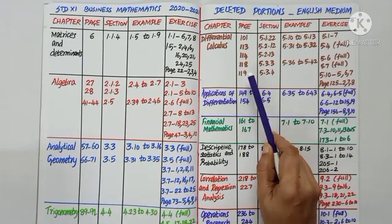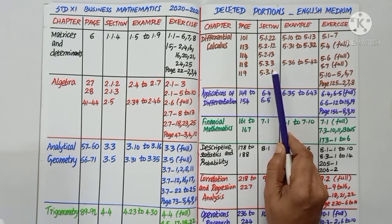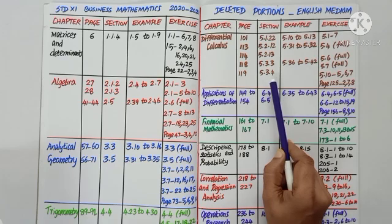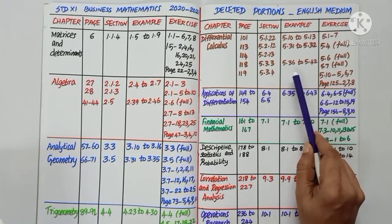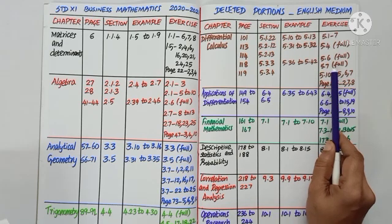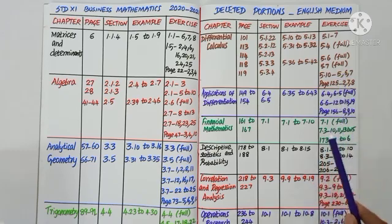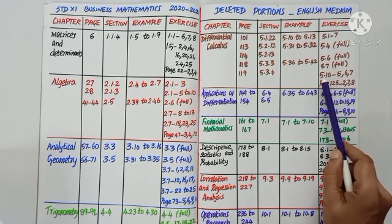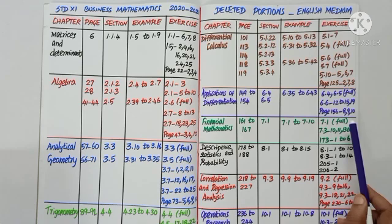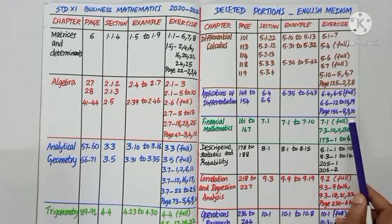Page number 118, section 5.3.3 — Derivatives of Implicit Functions — and page number 119, section 5.3.4 — Logarithmic Differentiation — the two sections are deleted. The related examples 5.36 to 5.42 are deleted. Exercises 5.6 and 5.7 are fully deleted. In objective type questions, exercise 5.10, question numbers 5, 6, and 7 are deleted. In miscellaneous problems under Chapter 5, page number 125, question numbers 2, 7, and 8 are deleted.